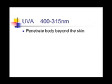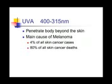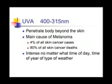UVA rays have the longest wavelength and can penetrate the body beyond the skin. Although UVA rays can cause cancer less frequently, they are also the main cause of melanoma, the most deadly form of skin cancer. Melanoma constitutes only 4% of skin cancers, but it causes 80% of the deaths. UVA rays are coming down at the same intensity no matter what time of day or time of year it is. They are present during summer and winter and can penetrate clouds and windows.